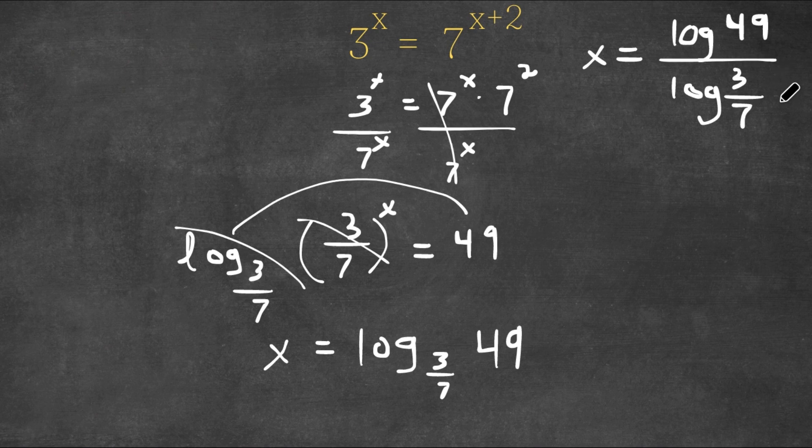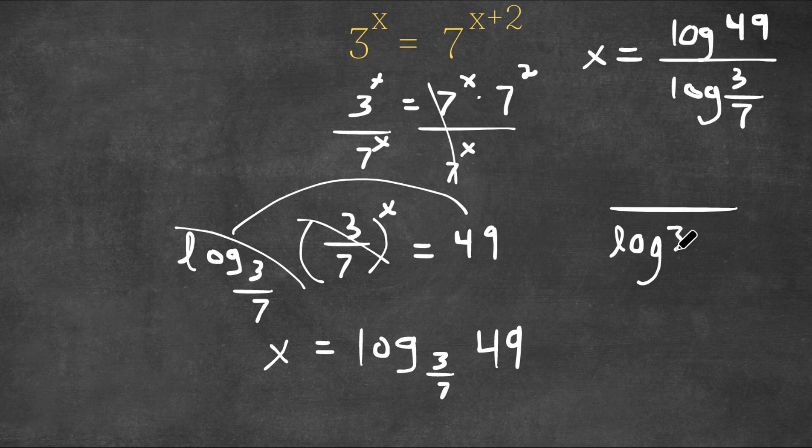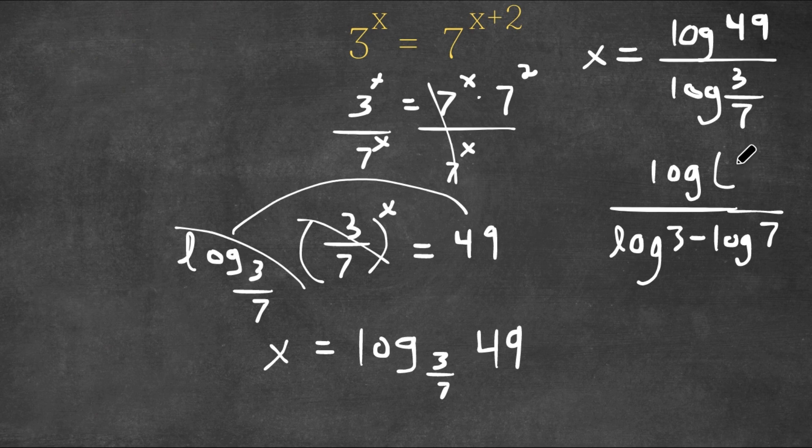Now, log of 3 over 7 can be rewritten as log 3 minus log 7. And for the top, log 49 can be rewritten as log 7 squared.